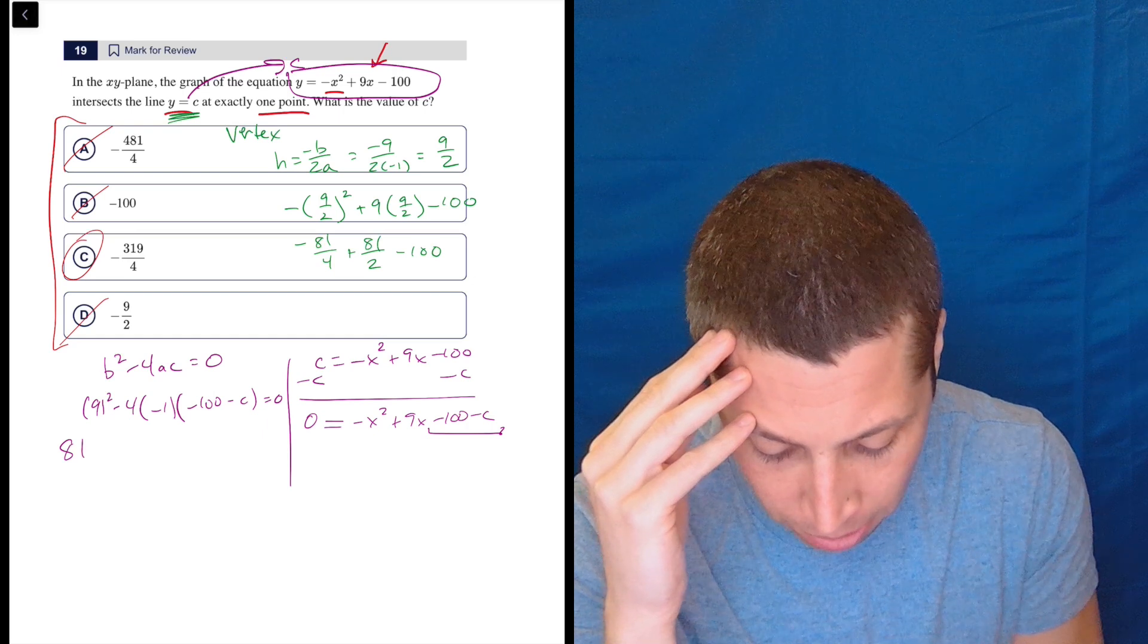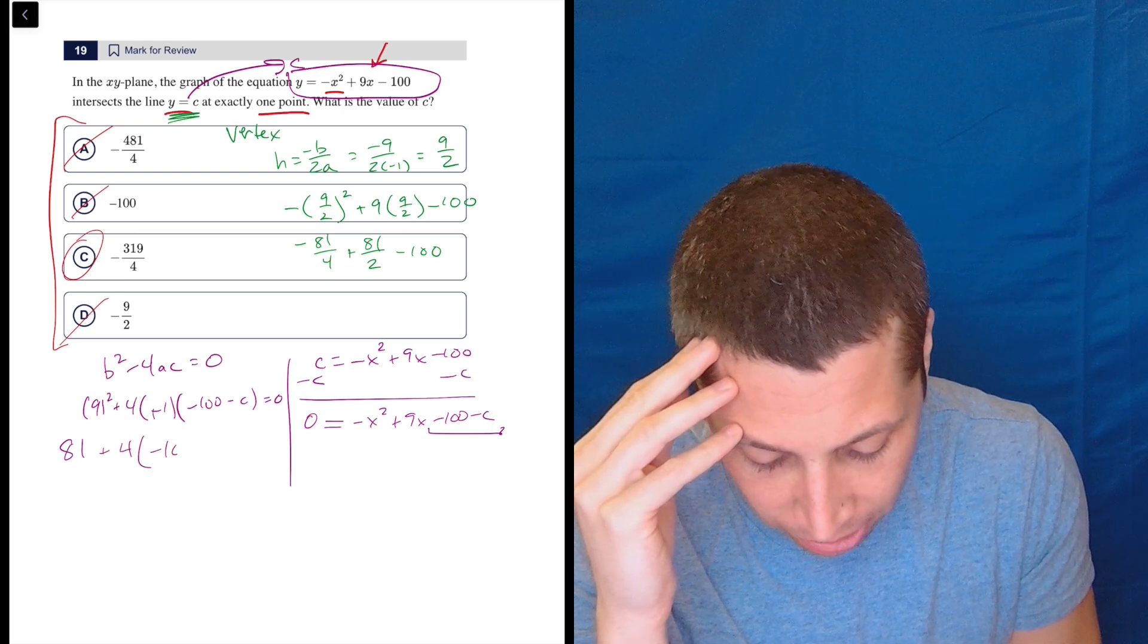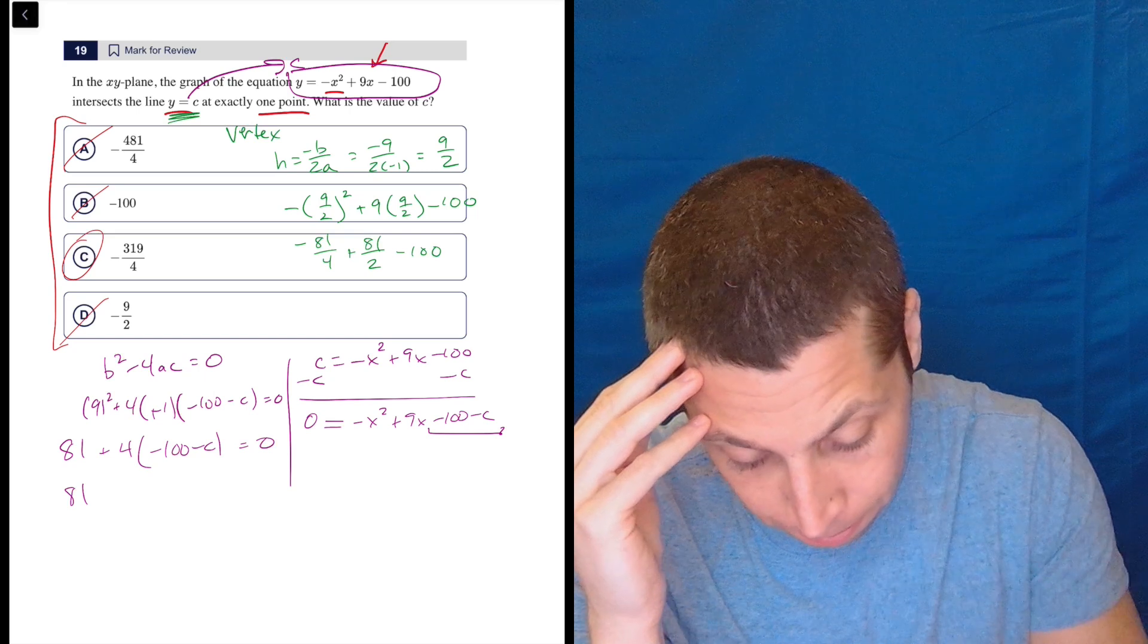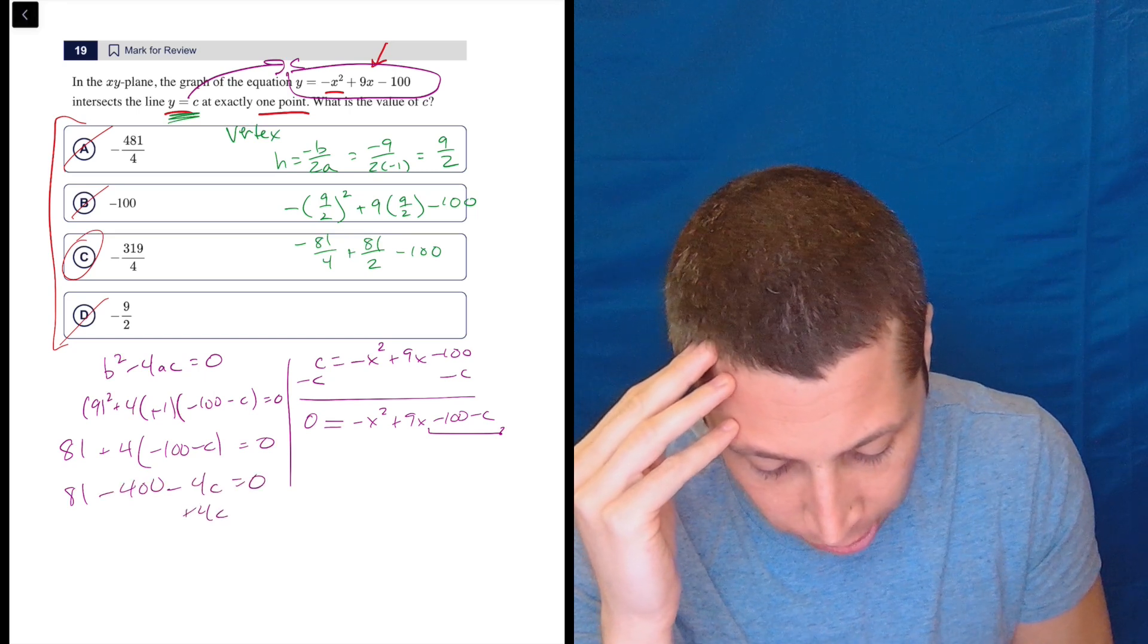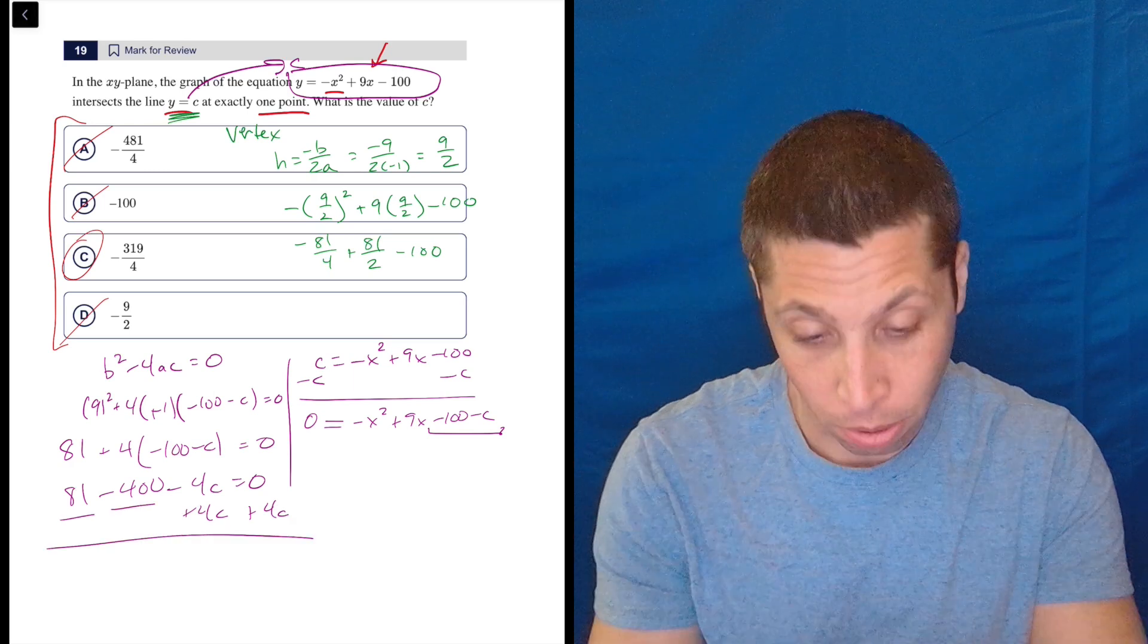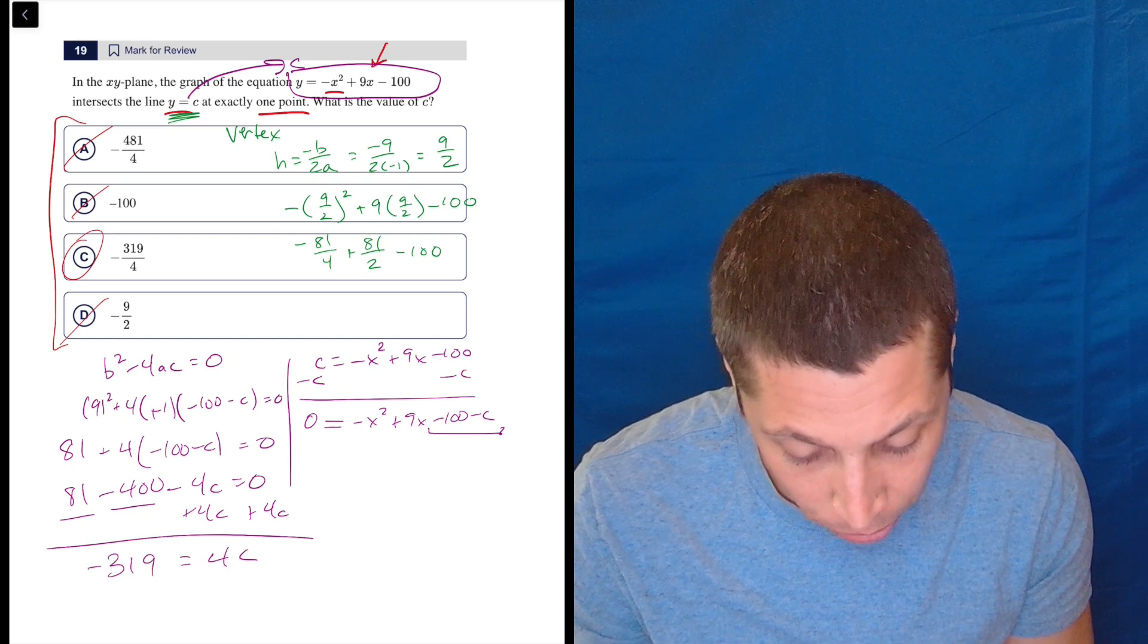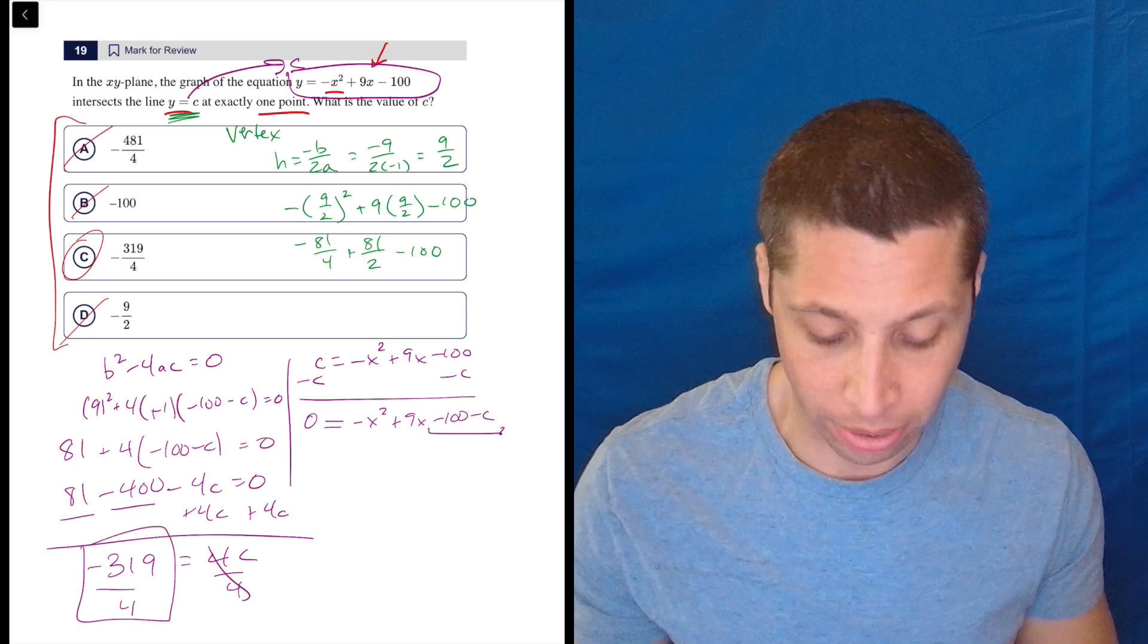So we got to clean this up. So 9 squared is 81. Let's get rid of these. That's a plus 4 times negative 100 minus c. So 81 plus, or now it's minus, minus 400 minus 4c is equal to zero. Let's add this over and combine like terms. So 81 minus 400 is negative 319. That's looking familiar equals 4c divided by four divided by four and c is negative 319 over four.